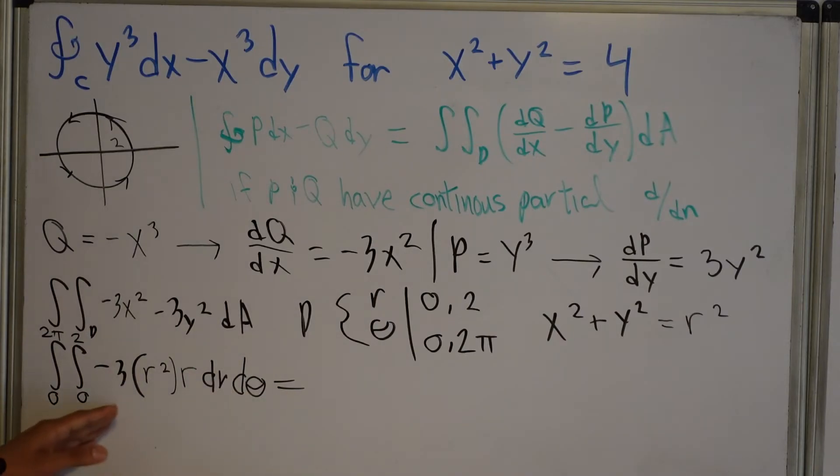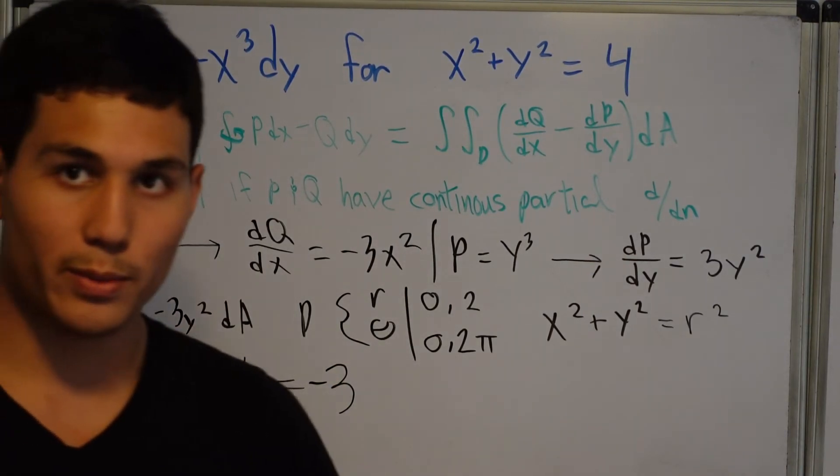The negative 3 can stay outside, right? So we're like that. And this is an R cubed. So first, let's do this integral. Just 0 to 2 for R cubed.